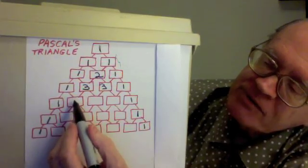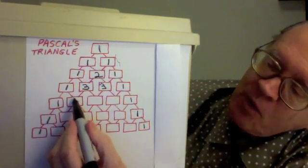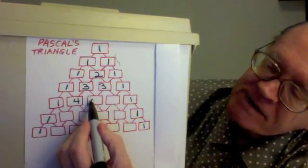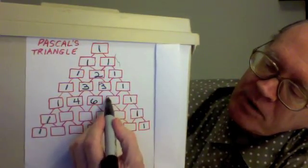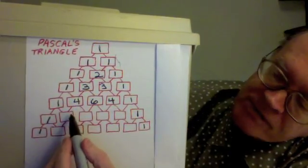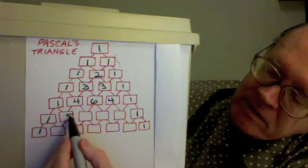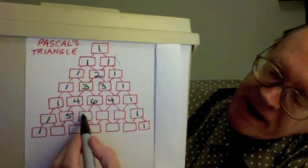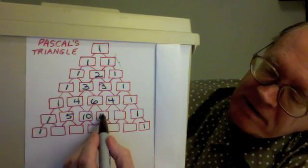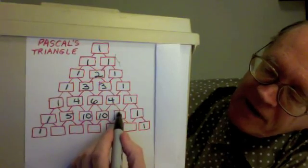Coming to the next row, one plus three is four, three plus three is six, three plus one is four. Next row, one plus four is five, four plus six is ten, six plus four is ten, four plus one is five.